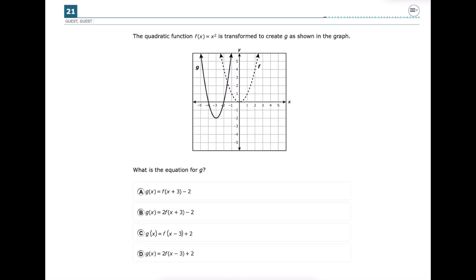Whenever we're talking about transformations, the first thing that I'm going to look for is does our graph move up or down, because that's going to be the easiest thing to see right away. So letter f is our original graph, letter g is the graph after it's been transformed.